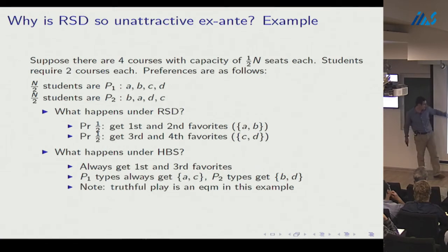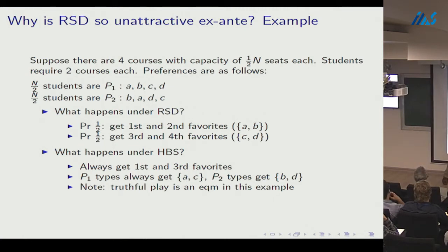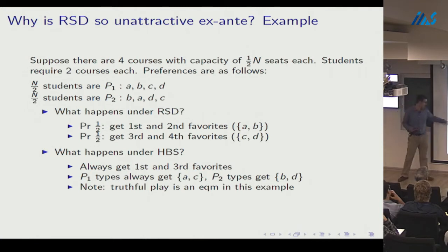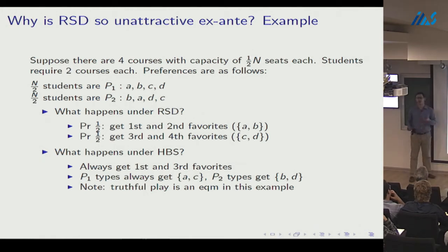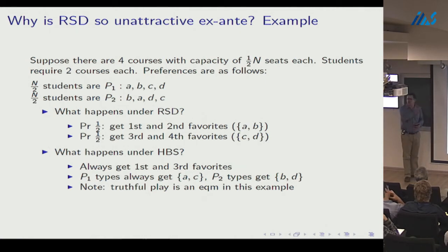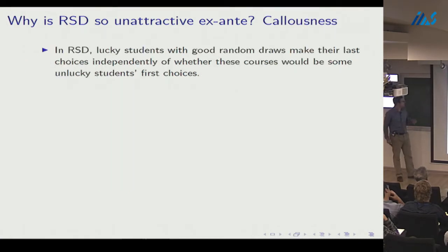In the dictatorship, half the students get their bliss point (average rank 1.5) and half get the worst bundle (average rank 3.5), for a societal mean of 2.5. In the draft, everyone gets their first and third favorite courses — mean average rank of 2. The draft has better mean and second-order stochastic dominance over the dictatorship. We call this phenomenon 'callousness' in the random serial dictatorship.